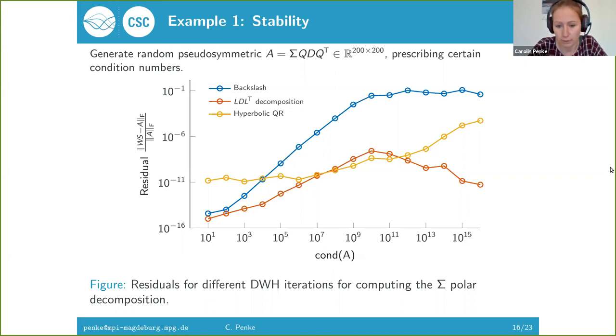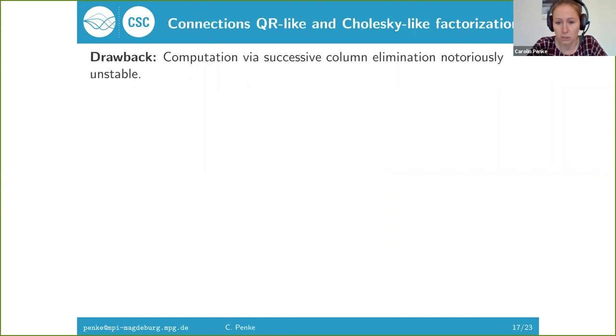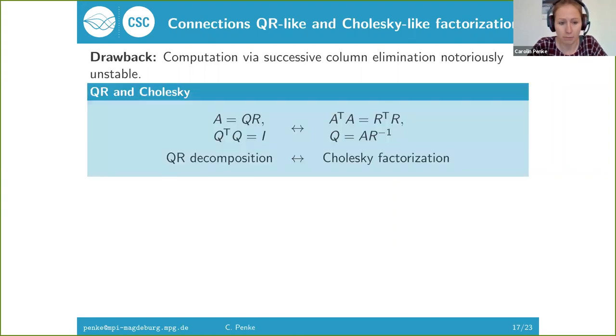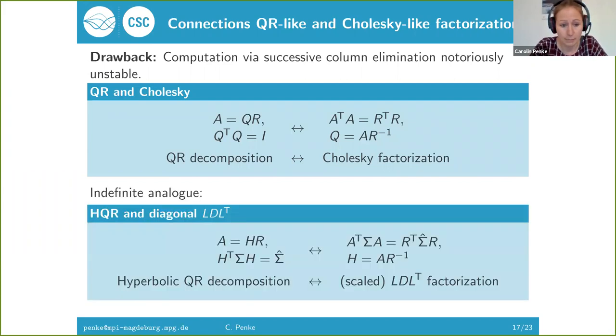Our story is not finished yet. We still hoped to get better results. To get there I have to lay out some connections between QR-like decomposition and Cholesky-like factorizations. This is probably something many of you are familiar with. The QR decomposition of a matrix is related to a Cholesky factorization. If you have the QR decomposition of A, then R will also be the Cholesky factor of A transpose A. It's even possible to compute the orthogonal factor Q by doing a Cholesky factorization and then applying the inverse of R to A. This is usually not done because it's less stable than doing the Householder standard way of computing a QR decomposition.